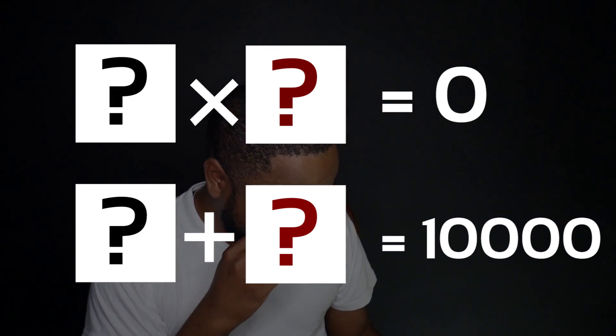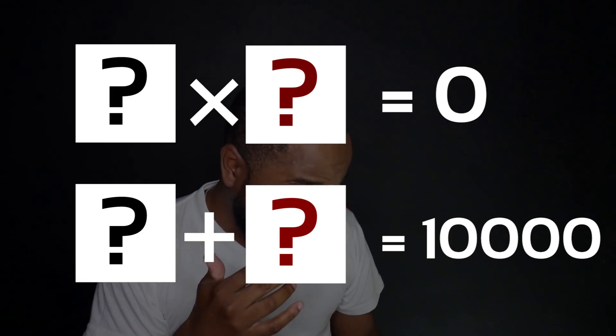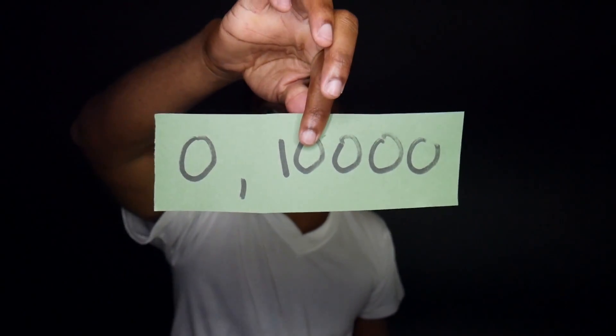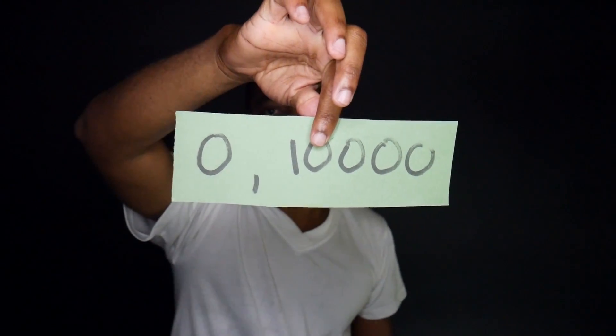Now for the last question: these two numbers add up to give me 10,000, but when you multiply them, you get zero. The answer: if you're multiplying two numbers and getting zero, one of the numbers must obviously be zero — so the two numbers are 0 and 10,000.